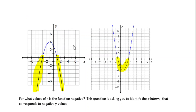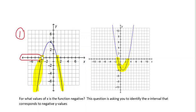For this first function that has a negative leading coefficient — because it opens down — our y values are negative for all of this portion of the x-axis, all the way up until you get to that x-intercept of negative 3. So that's everything — all of the y values to the left of, so less than, negative 3.